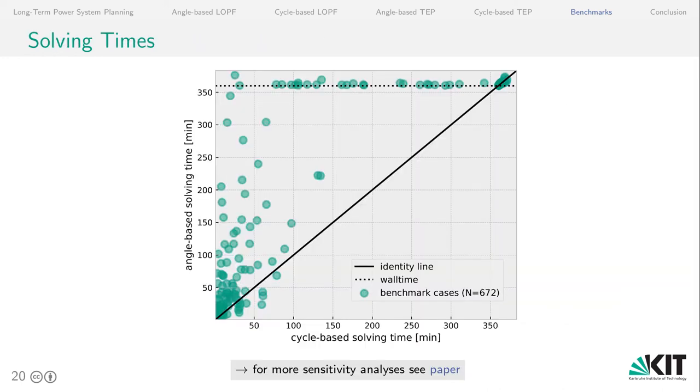On this slide, you can see a comparison of the solving times of the cycle-based formulation and the angle-based formulation. So each dot represents a benchmark case. And if these dots are above the identity line, then the cycle-based formulation did solve faster. And if it's below, then the angle-based formulation solved faster. So what you see is that a very large share of cycle-based formulations solved much faster than the angle-based formulation. And did even solve beyond the wall time of 6 hours. There's more evaluation in the full paper, so feel free to have a look at it.